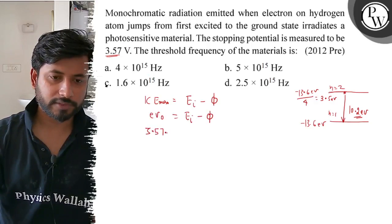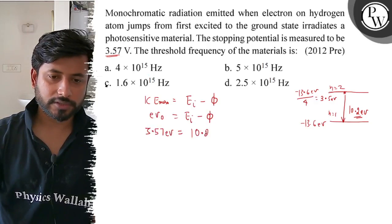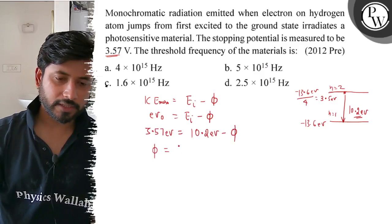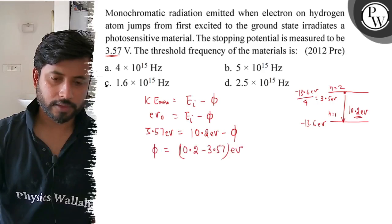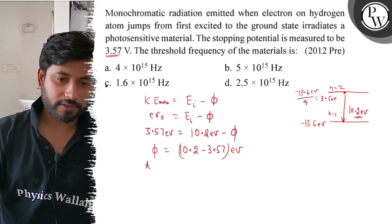Stopping potential is 3.57, so 3.57 electron volt equals incident photon energy 10.2 electron volt minus φ. From here, φ will come out to be 10.2 minus 3.57 electron volt.